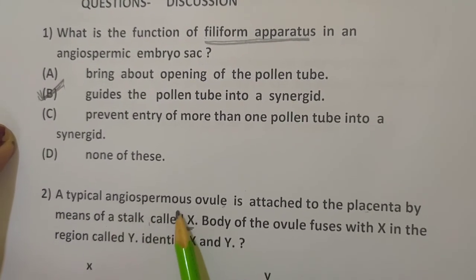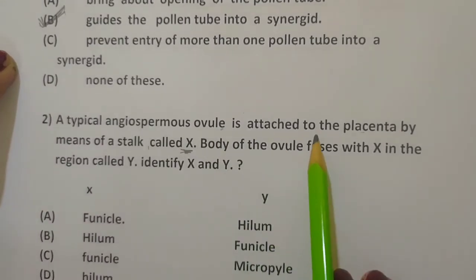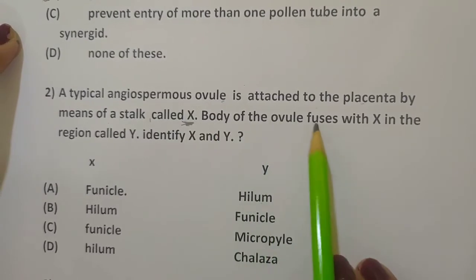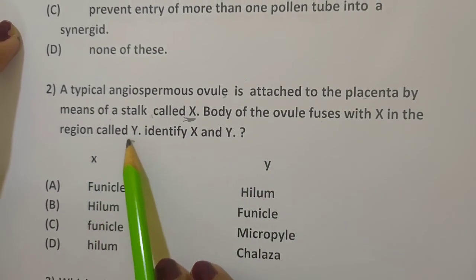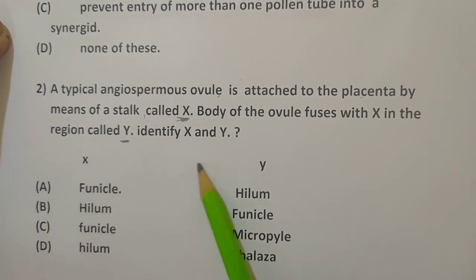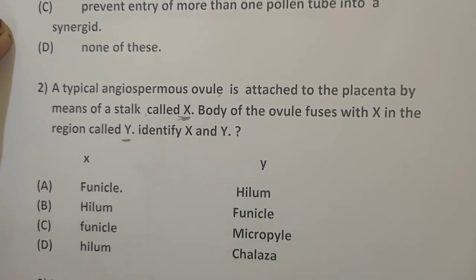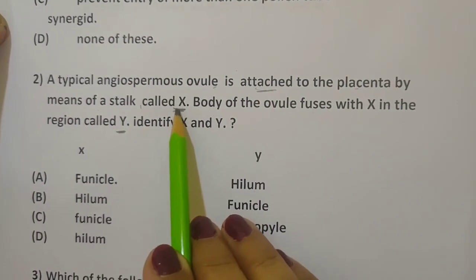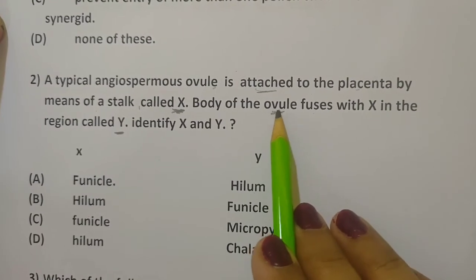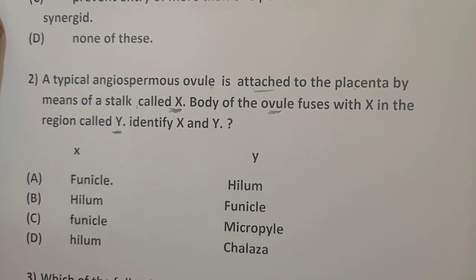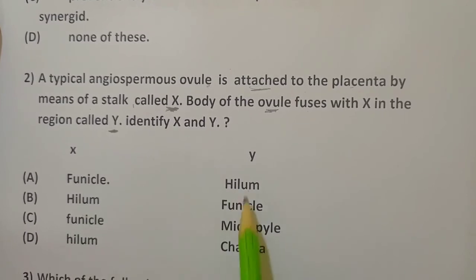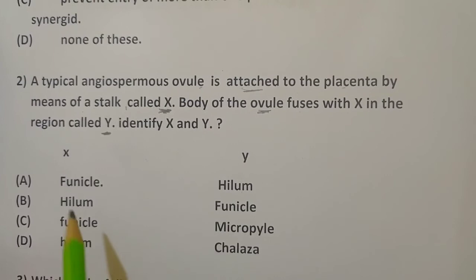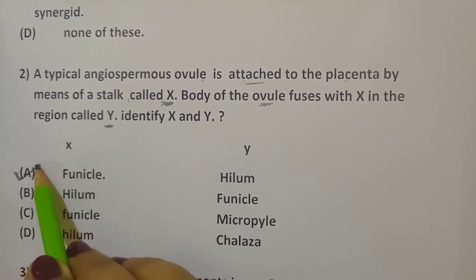Next question: A typical angiospermic ovule is attached to the placenta by means of a stalk called X. The body of the ovule fuses with X in the region called Y. We need to identify X and Y. We know the attachment stalk is called the funicle (X), and the region where the body of the ovule fuses with the funicle is called the hilum (Y). So the correct answer is funicle and hilum.